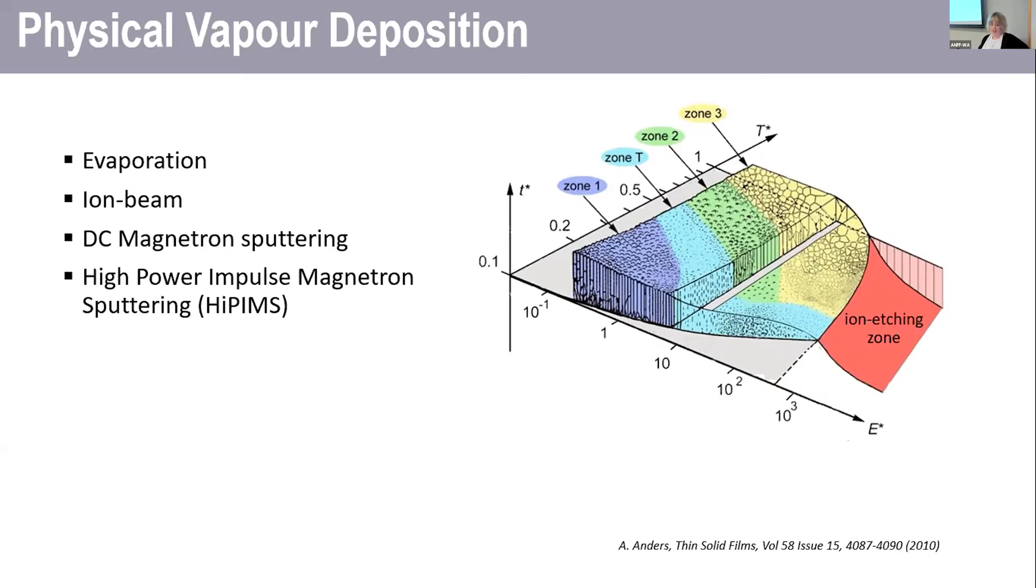For the different techniques, they can all access that temperature range because you can simply heat the substrate while you're depositing. So they're typically separated by the energy axis. Evaporation is the lower energy technique. It's good because it's very cheap, it's easy, but it is the most impure of the physical vapor deposition techniques.